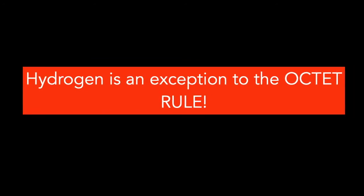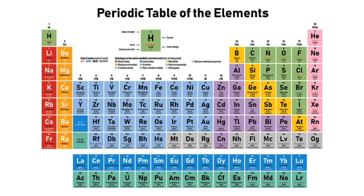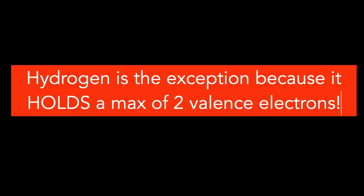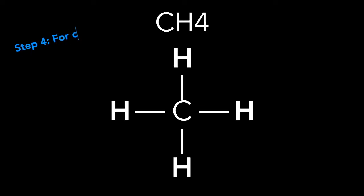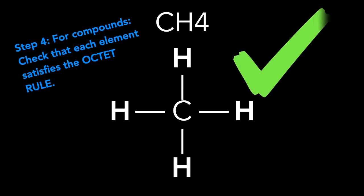The answer is that hydrogen is an exception to the octet rule. If you look at the periodic table, hydrogen only needs one valence electron, but it is stable with two valence electrons, breaking the octet rule. Therefore, hydrogen is the exception because it holds a max of two valence electrons. Step four out of six is our last step in this case: for compounds, check that each element satisfies the octet rule. This is the correct Lewis dot structure for CH4.